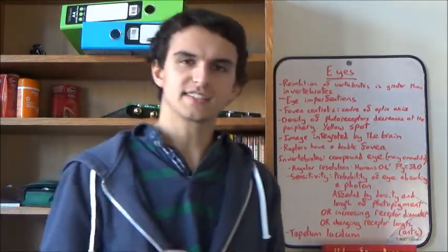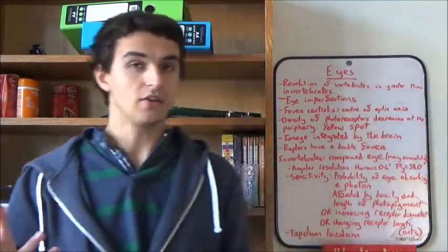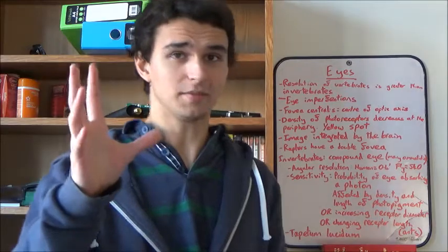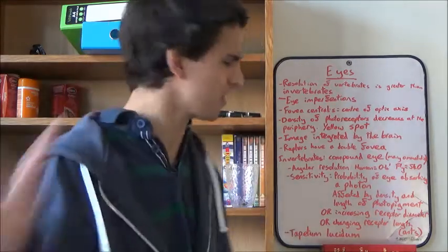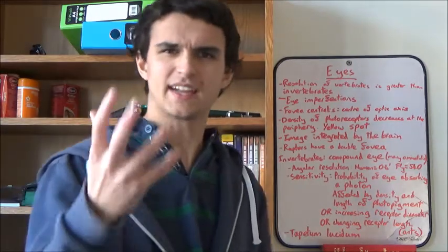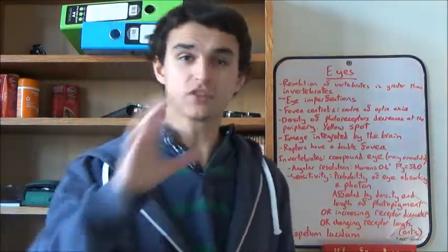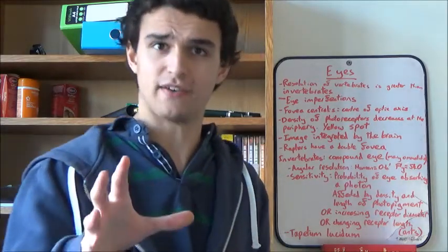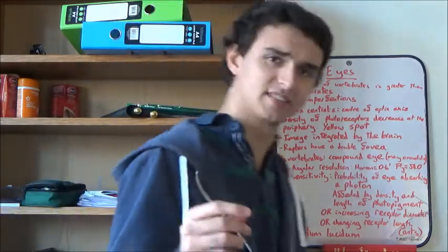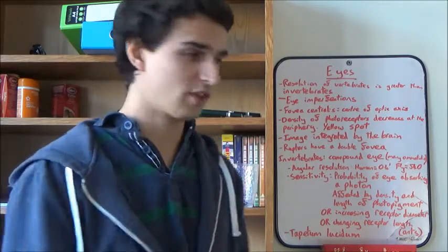We're going to start off by looking at some of the imperfections of the eye. Now you might think a lot of creationists argue the eye is such a perfect, complicated structure, how on earth could it evolve. Well, the truth is that the eye isn't perfect. It's got loads of imperfections that mean it doesn't work as well as it could have done.